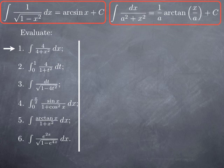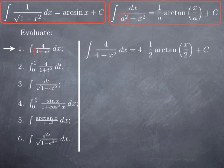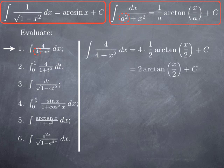Let's see how that applies in concrete cases. For the integral of 4 over 4 plus x squared: it matches the formula with a squared equal to 4, so a equals 2. We pull out the 4, and using the formula with a equal to 2, we get 4 times (1/2) arctan(x/2). Since 4 times one half is 2, we obtain 2·arctan(x/2) plus a constant.